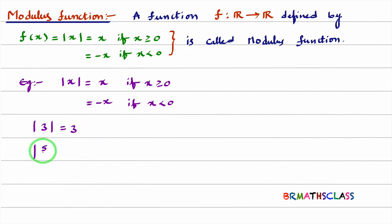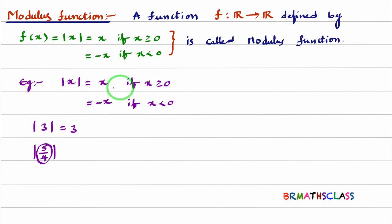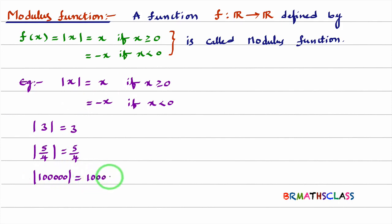If I take modulus of 5 divided by 4: 5 by 4 is greater than 0, so it comes to the first case. Modulus of x is x, so modulus of 5 by 4 is 5 by 4. Modulus of 1 lakh: 1 lakh is positive, so it comes under the first case. Modulus of 1 lakh is 1 lakh only.